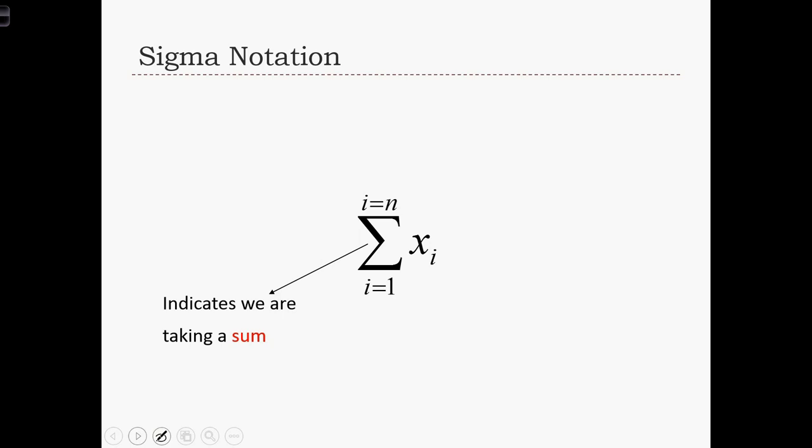Now, whenever you see the sigma, you must know that we are about to take a sum. We are going to sum over a list of numbers, and we're going to keep track of the list using the indexes below and above the sigma.